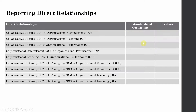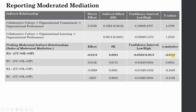Now, how do we report it? For simple direct relationships, copy the unstandardized coefficient and T values from the output summary for organizational commitment, organizational learning, or organizational performance. For the indirect effect from CC to OP through OC, get values from the indirect effect output, including the index of moderated mediation. In this case, only one indirect effect was moderated — by role ambiguity. I hope this session has helped you understand how to perform moderated mediation in a more complex model. A simpler model was covered earlier and the video link will be shared in the description. Thank you very much.